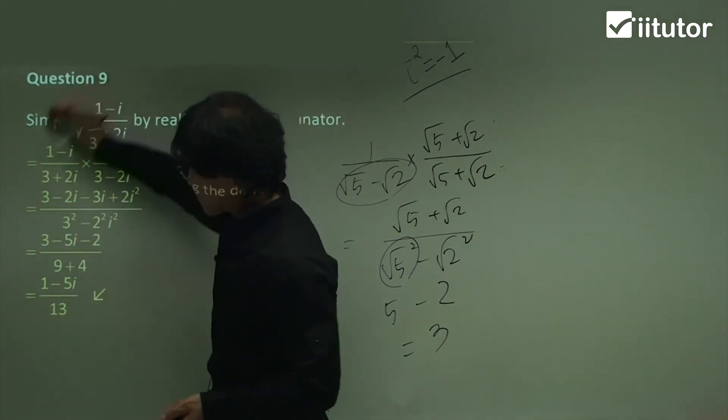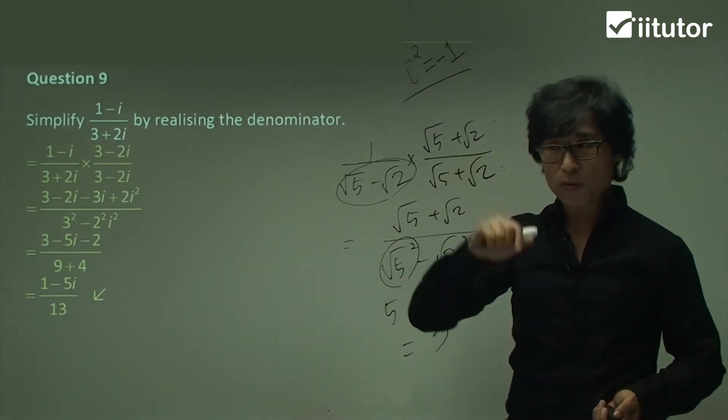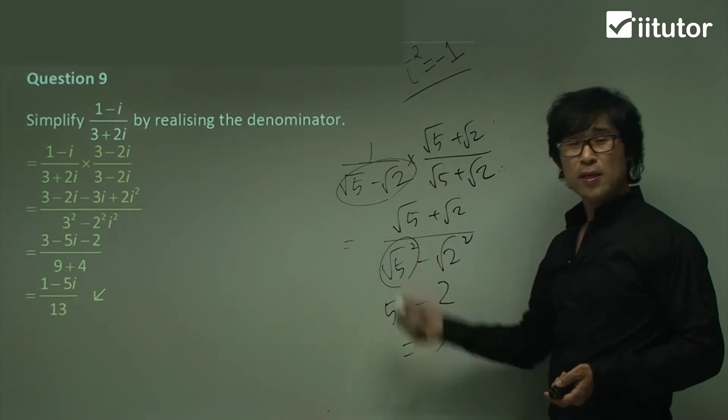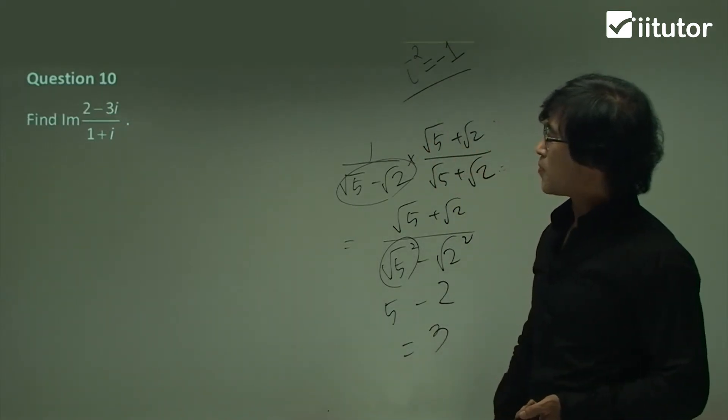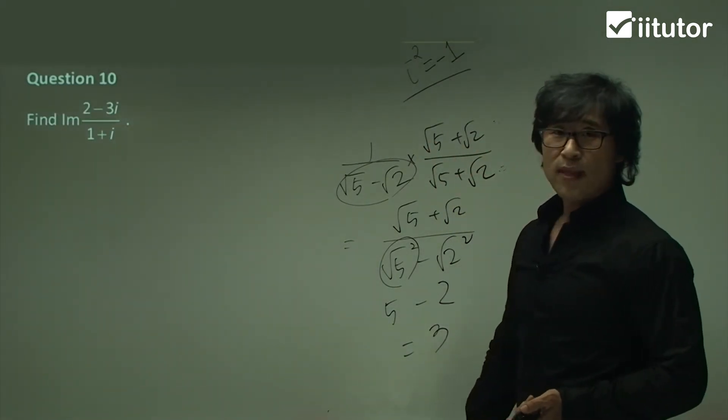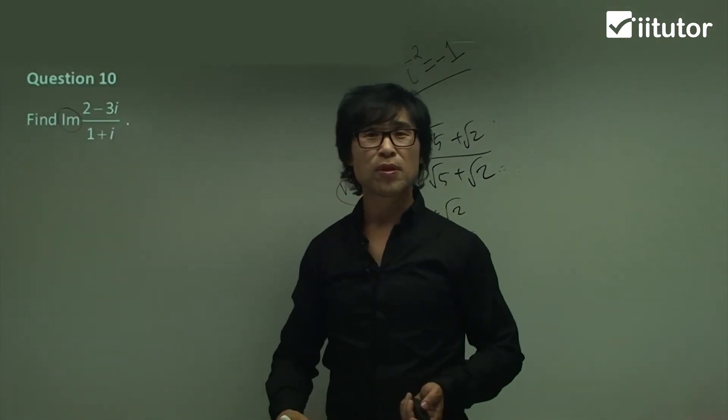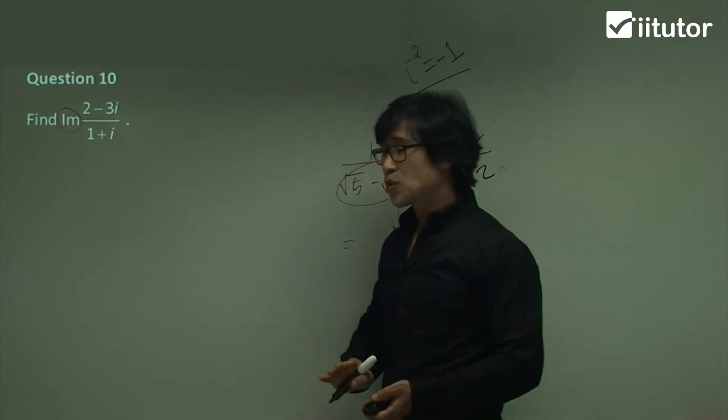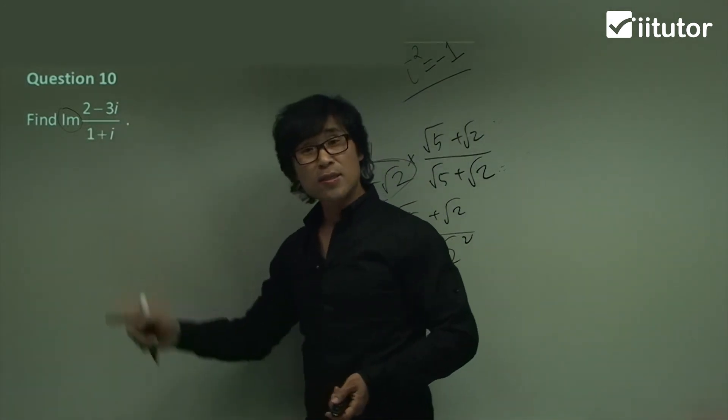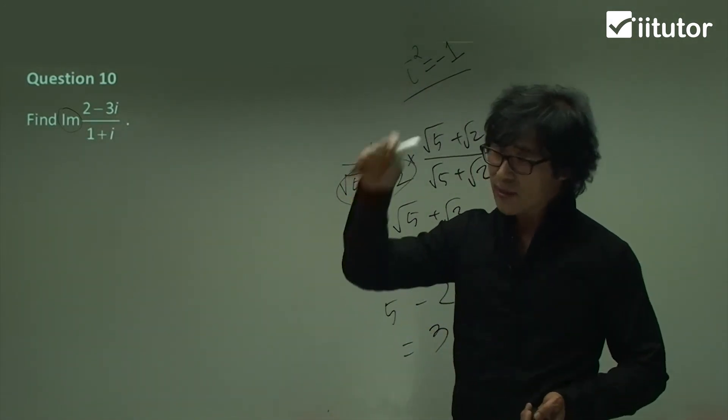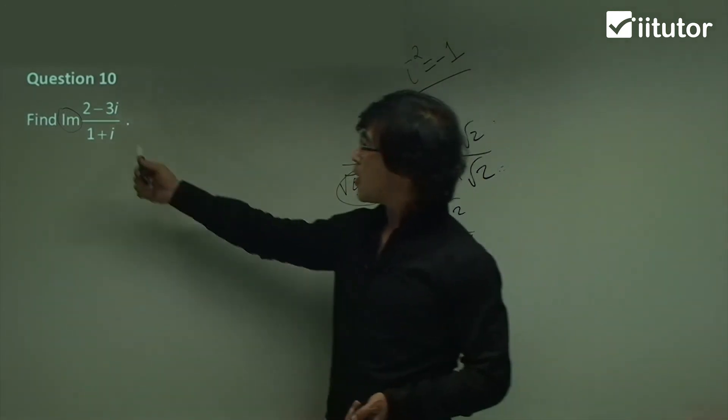So remember guys, every time, whenever you see the denominator, get the conjugate pair and multiply as you did in the year 9 and year 10. Let's do question 10. Question 10. Nothing different. However, question 10 is asking us to find out the imaginary part of this one. Well, it's too easy. It's still easy. As long as you are able to realize the denominator, and then all you need to do is pick the imaginary part. That's it. So let's start to realizing the denominator, everyone.